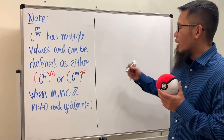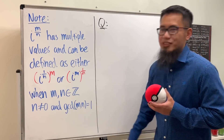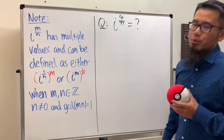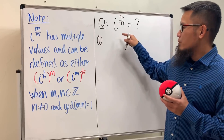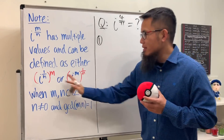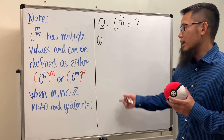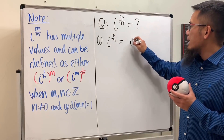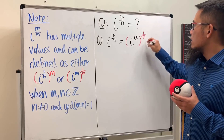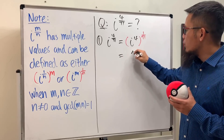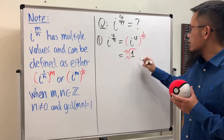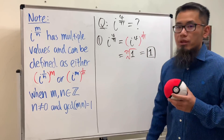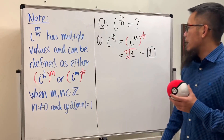Now here's the bizarre part: what if we have i to the 4/π power? How exactly shall we compute this? One way — even though π is not an integer, so the usual rule technically doesn't apply — is to compute i to the 4th first and then raise to the 1/π power. Inside we'd get 1, and the π-th root of 1 just gives us 1.